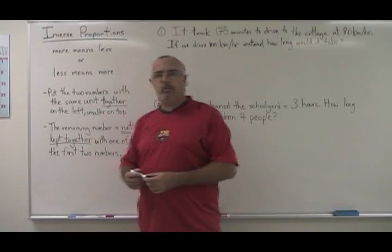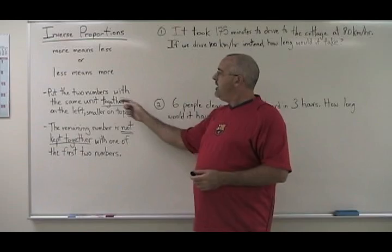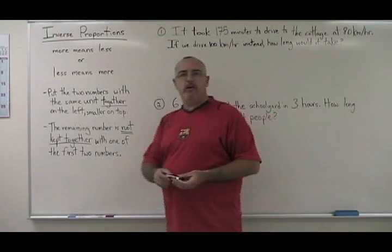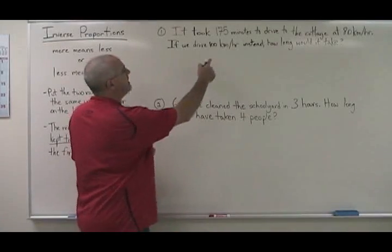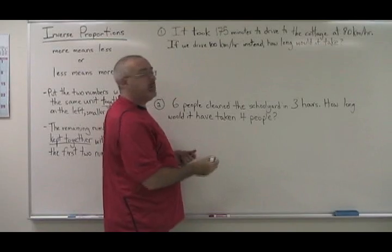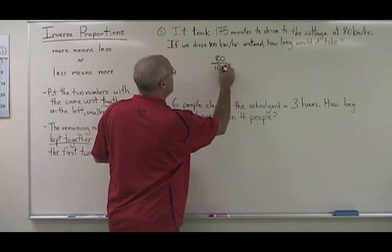How do you solve inverse proportions? The first rule is the same. Put the two numbers with the same unit together on the left, smaller on top. Let's try that with example one. We have 80 km per hour and 100 km per hour. Those are the two numbers with the same unit. We put them together on the left, smaller one on top.